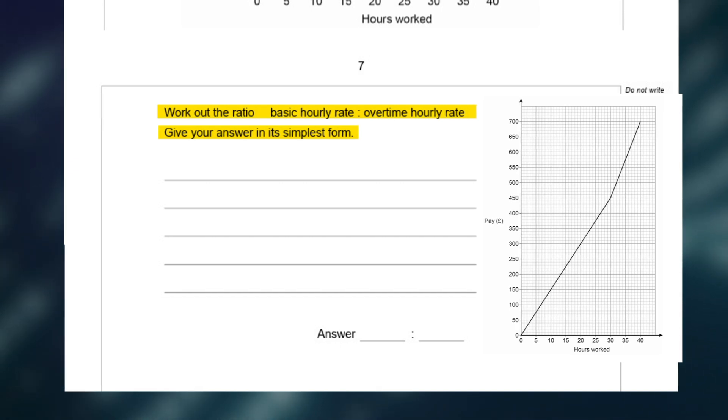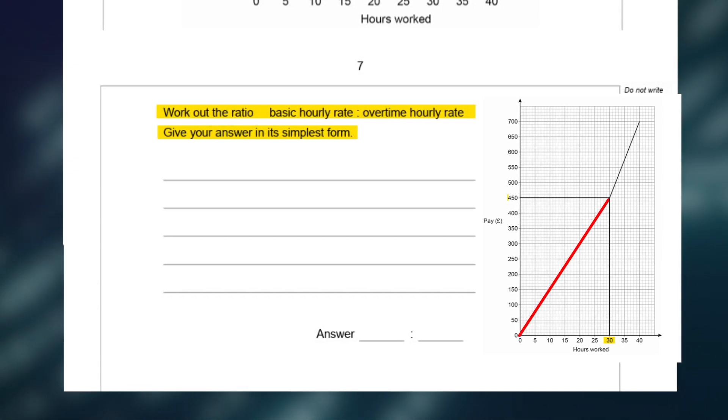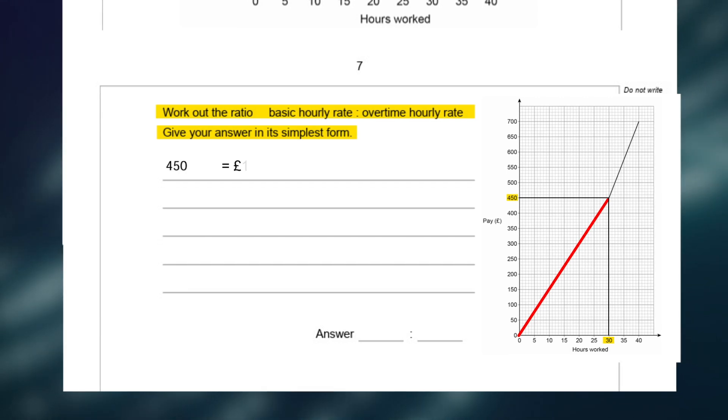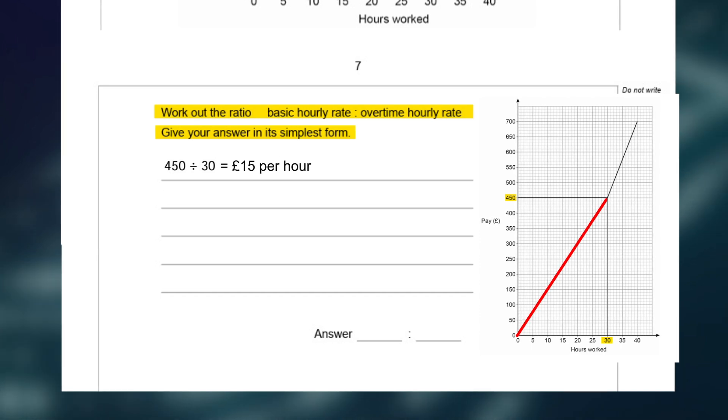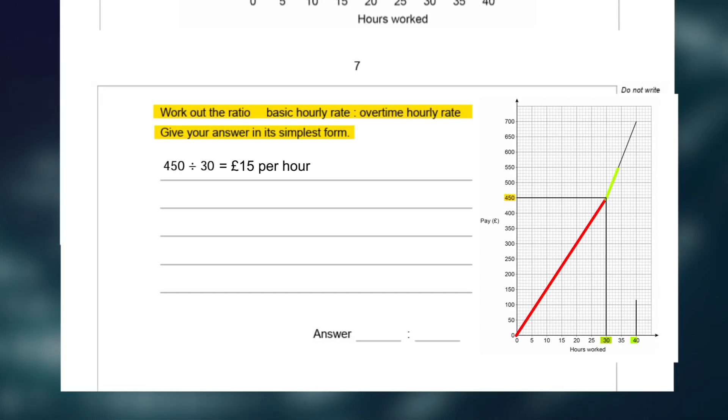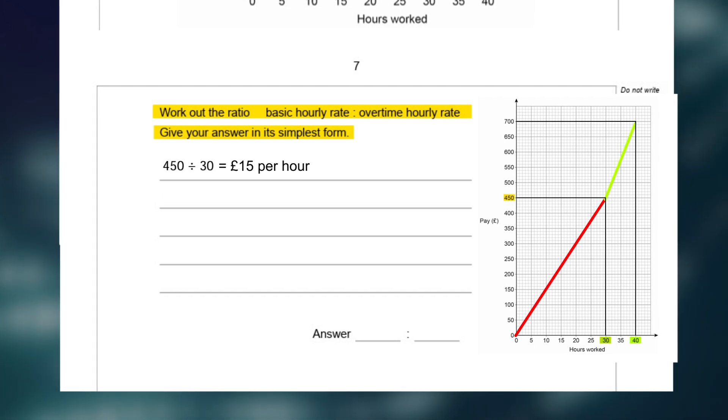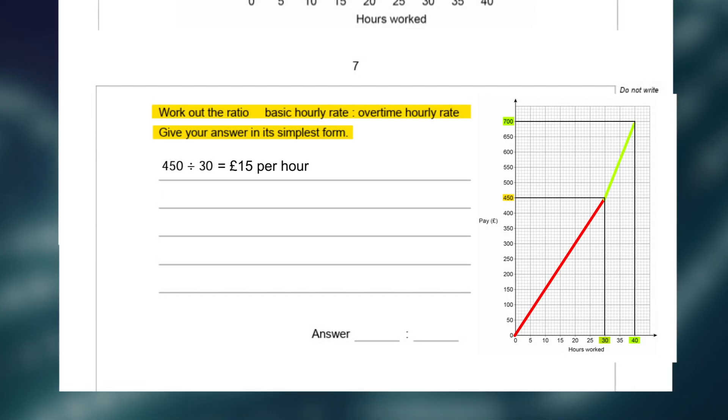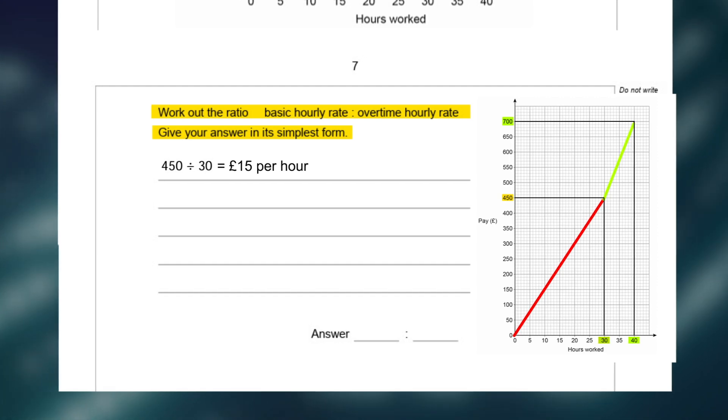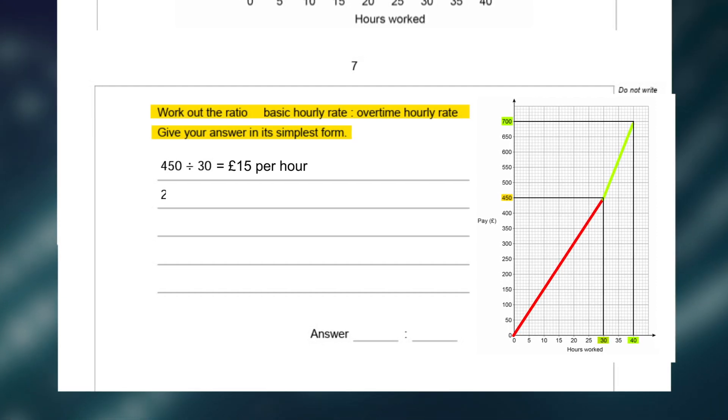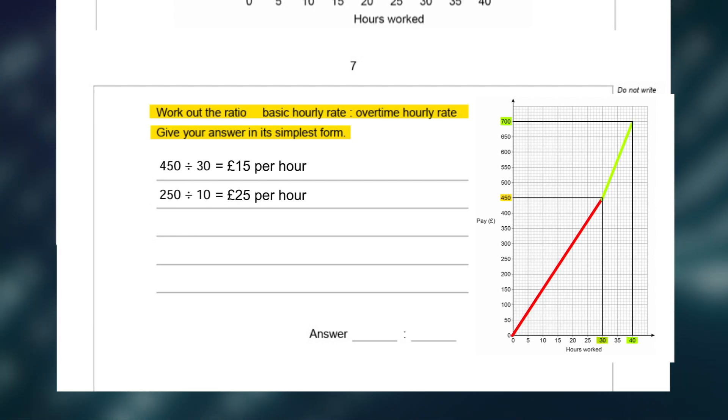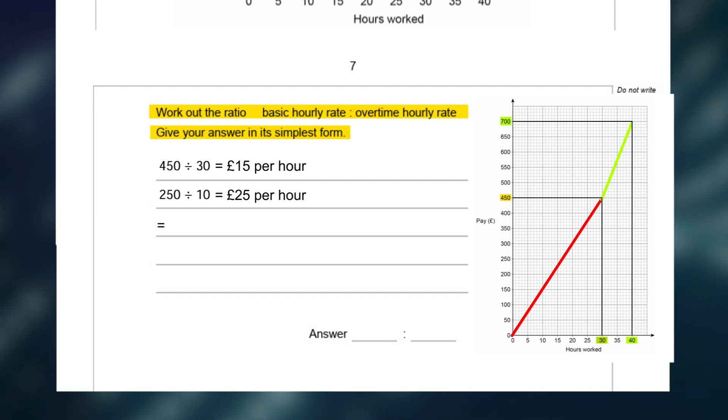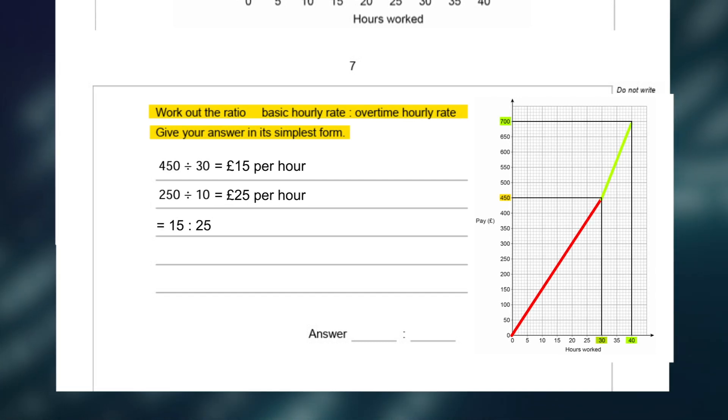Firstly, let's go across the x-axis and go to the 30 hours, and go up, and it meets at £450. £450 divided by 30 gives you £15 per hour. Now we want to work out the overtime, so let's look between the 30 and the 40 hours, which is 10 hours, of course. Let's go up, and it takes us to £700. £700 take away the £450 gives us £250. £250 divided by 10 gives us £25 an hour, which is what he was paid for overtime. This gives us a ratio of 15 to 25, and simplified down, this gives us 3 to 5, which is our final answer.